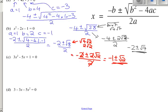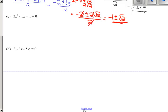Moving down a bit to do number 3. This time we have got a value for a, and more than 1. a is 3, b is minus 5, and c is 1.